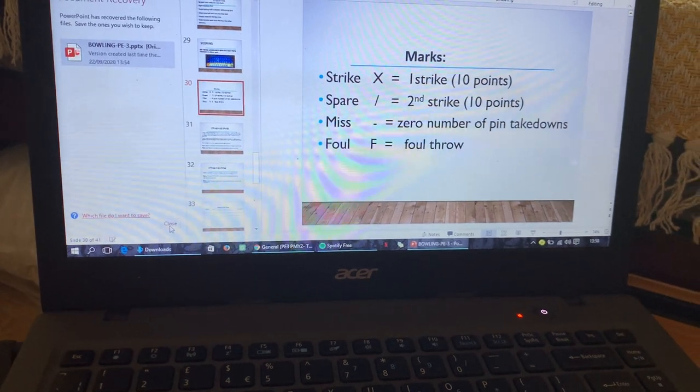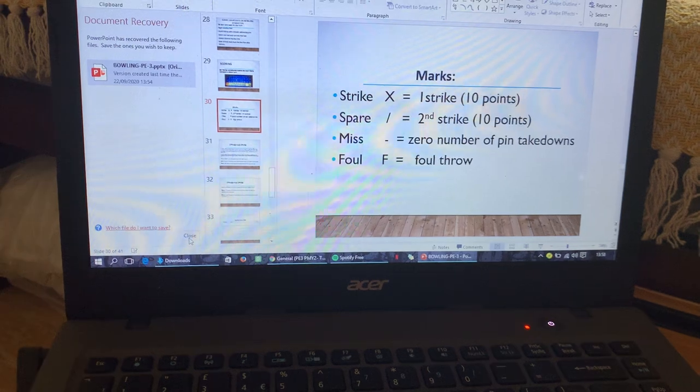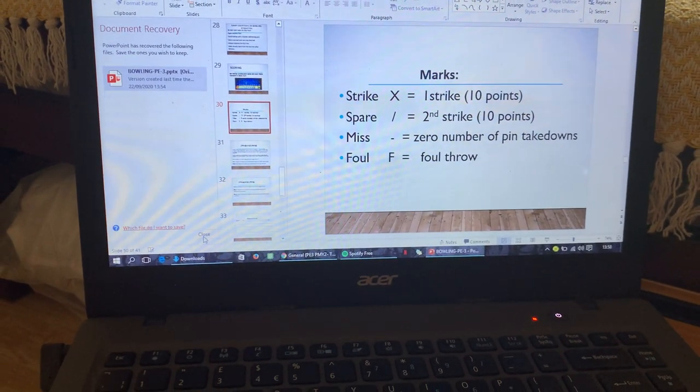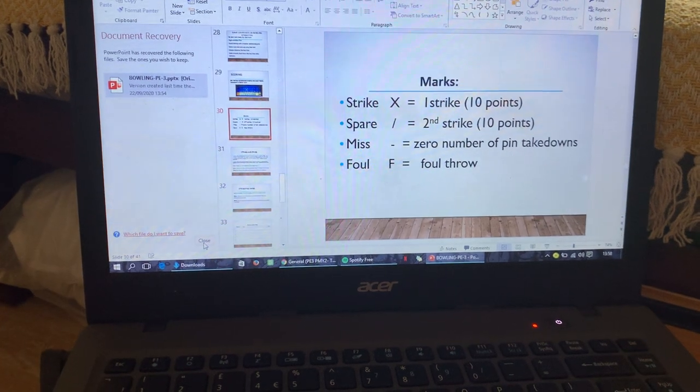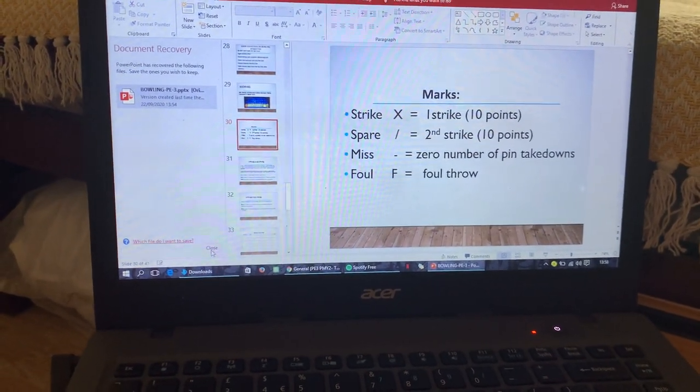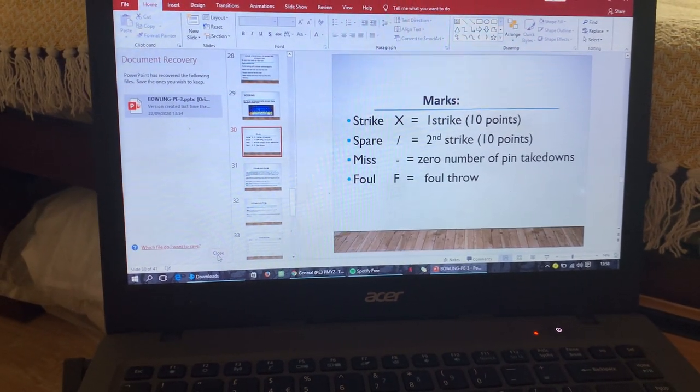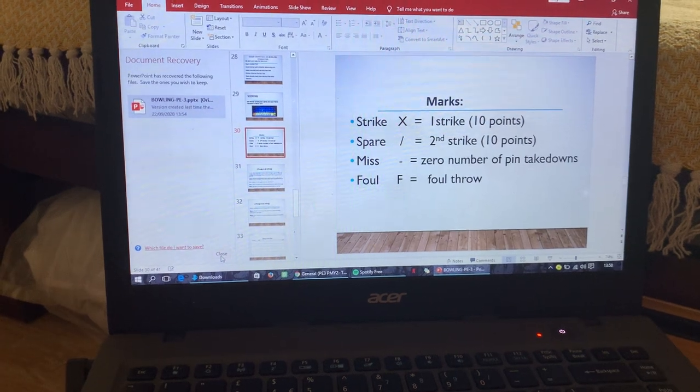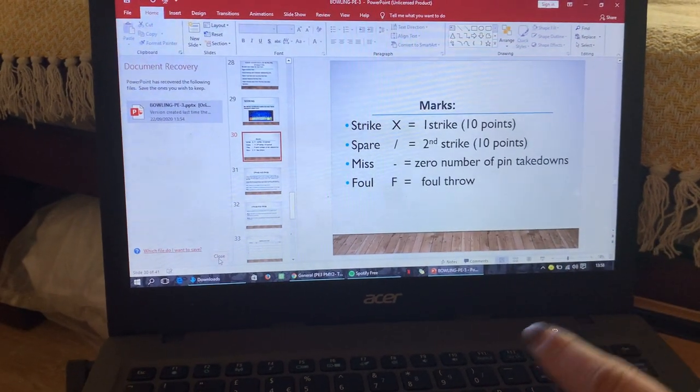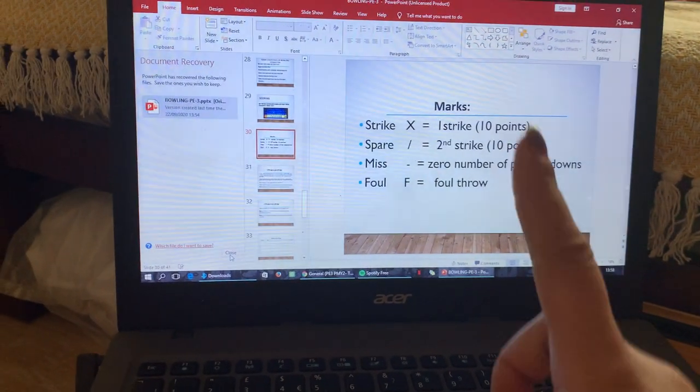So we have the different marks. We have for the strike, it is an X. A spare, it is a forward slash. A miss or a zero is a hyphen. And for the foul, it will be letter F. So these marks will give you the score. For the strike, it will have 10 points. But for the strike, you will have two bonus attempts for the next frame. And for the spare, you will only have one.